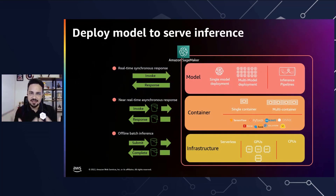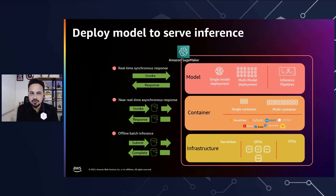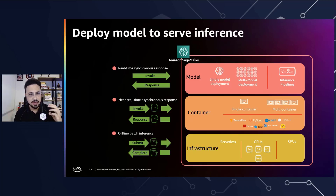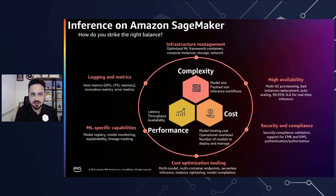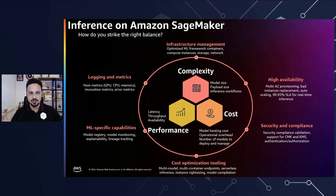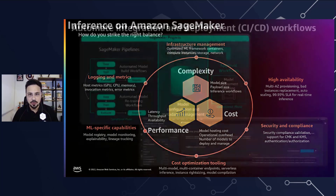Once you have all this data, metrics, and can choose the right model, the next step is putting it into production. You need to serve the model's inference, and SageMaker can help with this difficult task. For different needs, you need different strategies — for example, real-time synchronous responses, near real-time synchronous responses, or offline batch inference. SageMaker inference helps strike the right balance between model size, payload size, inference workloads, performance, and cost.